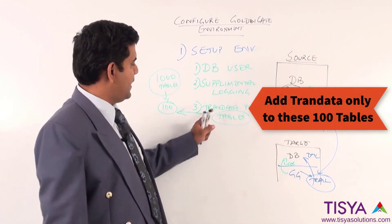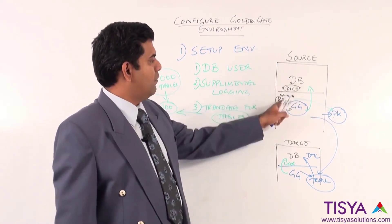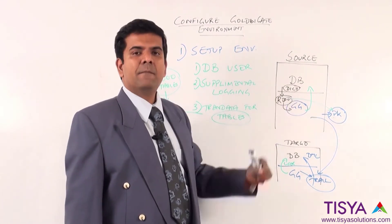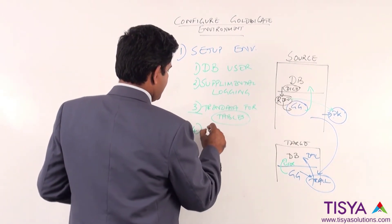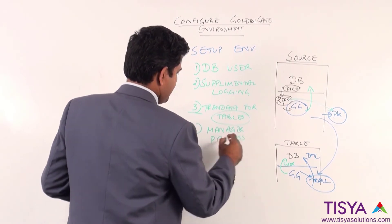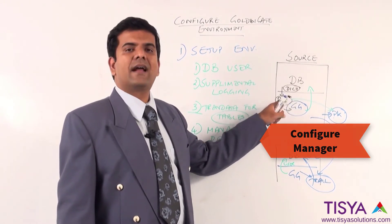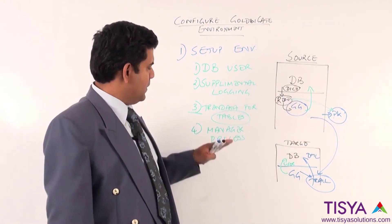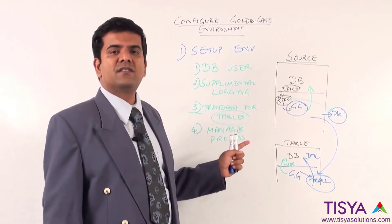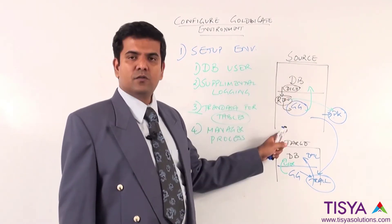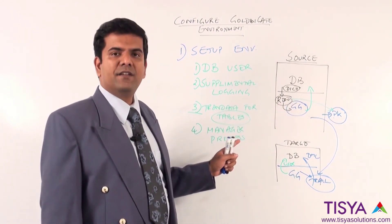By enabling TRAN data for those 100 tables through the GoldenGate GGSCI command interface, whenever those tables are manipulated, the redo log will also have the primary key information logged. The fourth step in the setup is to configure the manager process. The manager process must be started and running before you can start any extract or replicat in both environments. It is the root process for GoldenGate, containing information about which port the manager is running on and which free ports are available for starting other processes.